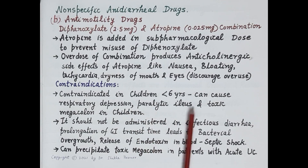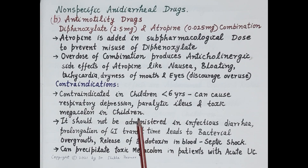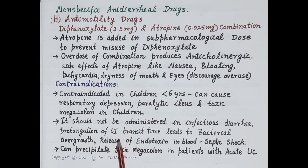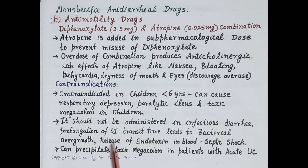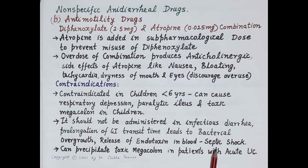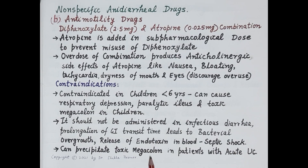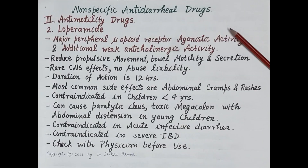Diphenoxylate is contraindicated in children less than 6 years, as it can cause respiratory depression, paralytic ileus, and toxic megacolon. It should not be administered in infectious diarrhea, as prolongation of gastrointestinal transit time can lead to bacterial overgrowth and release of endotoxins into the blood, causing septic shock. It can also precipitate toxic megacolon in patients with acute ulcerative colitis.